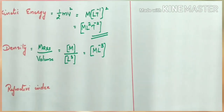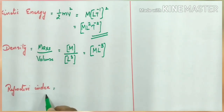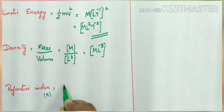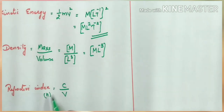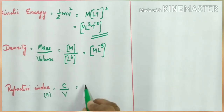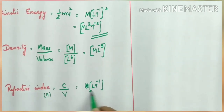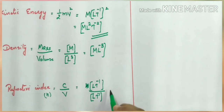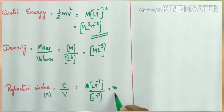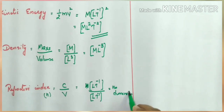Next, refractive index. The absolute refractive index n equals c by v — the velocity of light in vacuum divided by the velocity of light in the medium. Both c and v represent velocity with dimension [LT⁻¹]. Dividing [LT⁻¹] by [LT⁻¹], everything cancels. So refractive index has no dimension and no unit. This shows that some physical quantities are dimensionless.